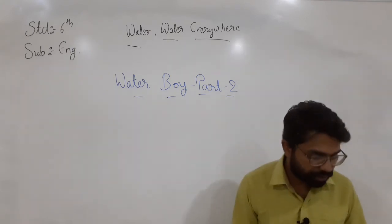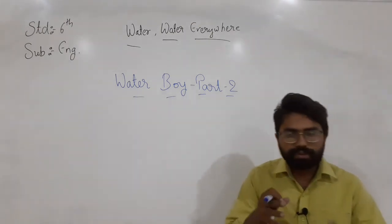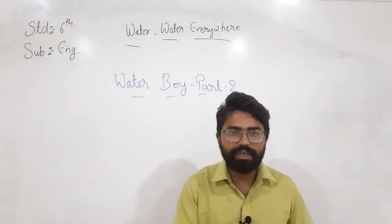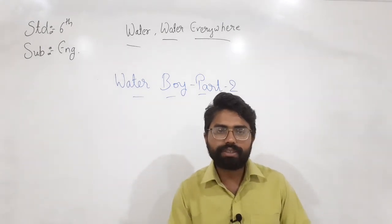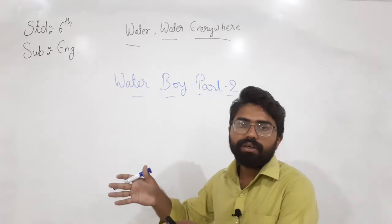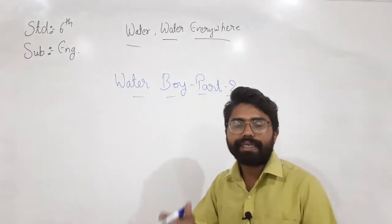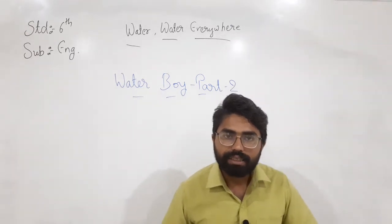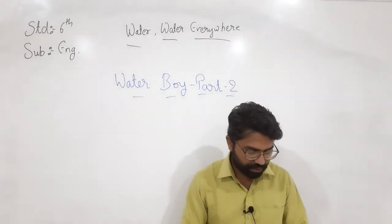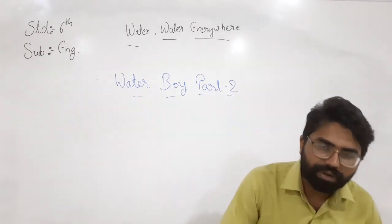Rajesh told Vijay to save the water used for washing his clothes so it could be used again later. After washing clothes, if water is still there, you should keep it to use in other ways — do not throw that water away. So Rajesh showed him three different ways to use water wisely and properly.